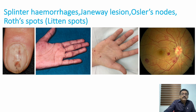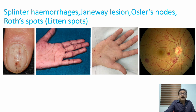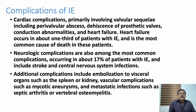Splinter hemorrhages, Janeway lesions, Osler's nodes, and Roth spots were common findings previously. Nowadays we don't see these lesions as often because early antibiotic treatment prevents most of the complications in infective endocarditis. But if the patient does not receive antibiotics, all these findings can still appear.